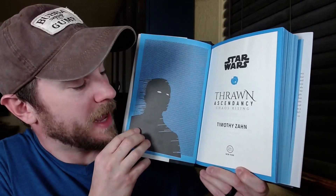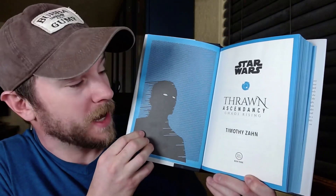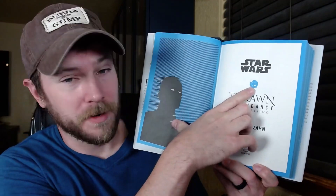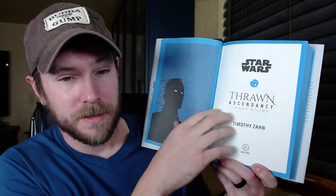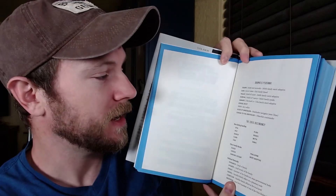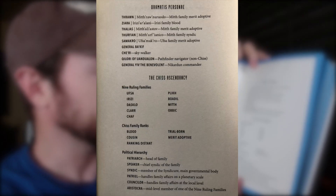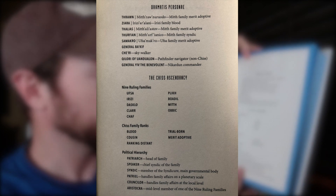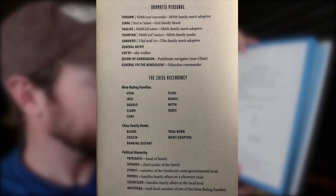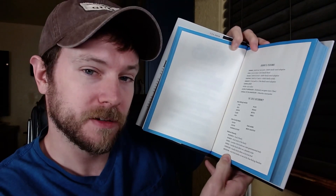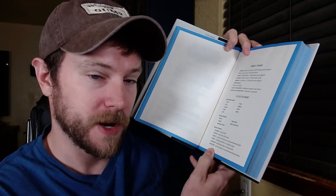The front title page is pretty classy. You've got a silhouette of Thrawn on one side and on the other side you have Thrawn Ascendancy: Chaos Rising with the Thrawn Ascendancy symbol. There's also a really cool page called the Dramatis Personae — a list of the most relevant characters. It includes the Chiss Ascendancy with the nine ruling families, the Chiss family ranks, and the political hierarchy. Some pretty cool reference points to turn to when reading the book.